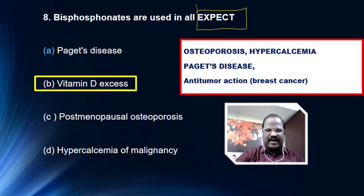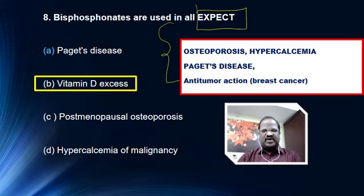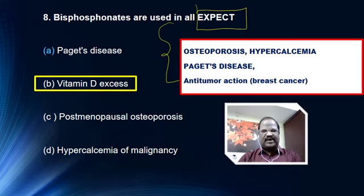Bisphosphonates also have anti-tumor activity. They are undergoing trials in the treatment of breast cancer and also in the treatment of CML. So now they are being explored for cancer treatment as well.